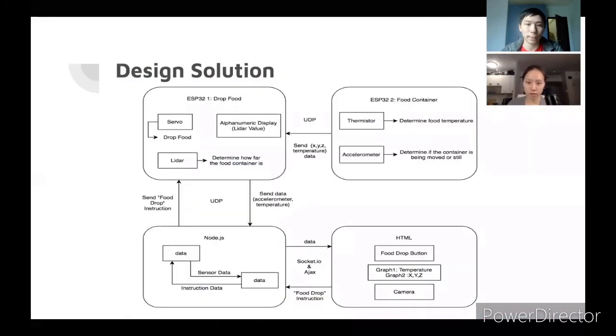This is our design solution. We have two ESP32s. One is to drop food and has a servo, LiDAR, and alphanumeric display to determine whether the food container is nearby. The food container is on the other ESP32, which has a thermistor and accelerometer to determine food temperature and if the container is being moved or still. We send the data through UDP to Node.js and to the HTML file to display the thermistor and temperature values. We also have a camera, and once you press the food drop button on the HTML page, the servo will drop the food into the container.